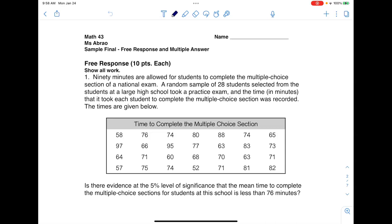So let's read through this and see if we can look for clues in the wording. It says 90 minutes are allowed for students to complete the multiple choice section of a national exam. A random sample of 28 students selected from the students at a large high school took a practice exam, and the time in minutes that it took each student to complete the multiple choice section was recorded. The times are given below. The first thing I noticed when I was reading is I saw a random sample of 28 students. And then the other thing I heard was that they were recording the time for each of those students. So there's my variable in the problem.